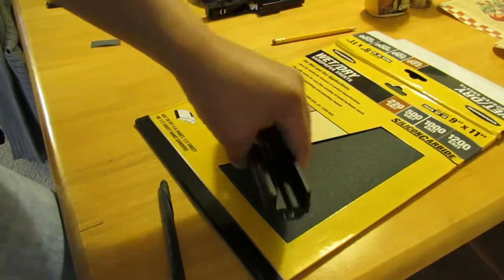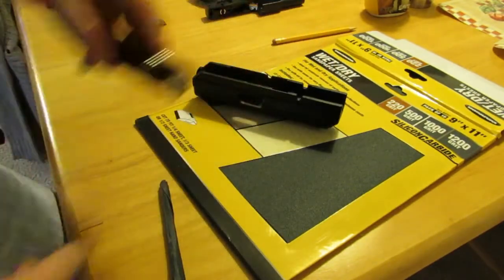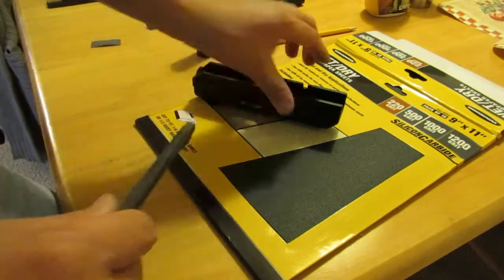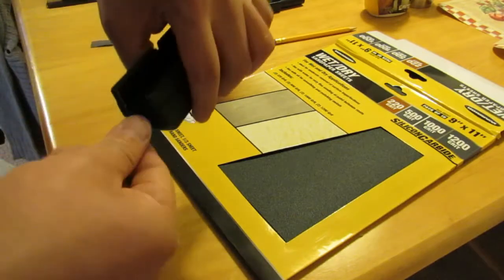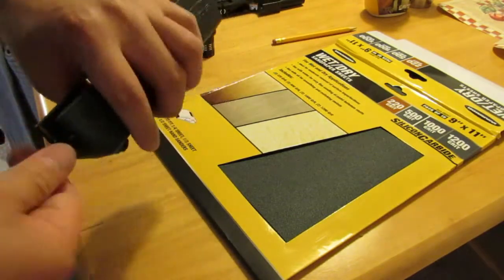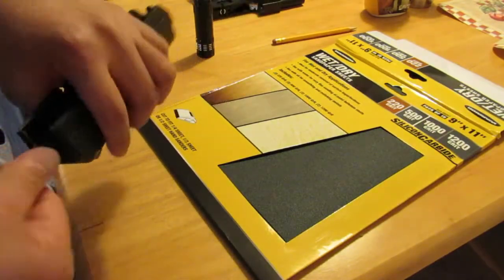So right there, that's the 220 grit. There's very little left in there. Then I'm going to work my way up: 500, 1000, 1200.